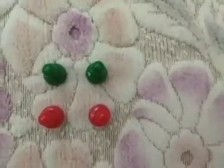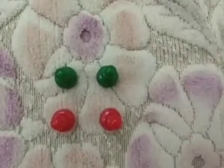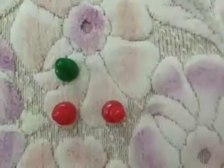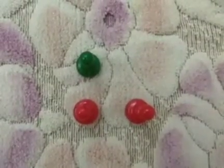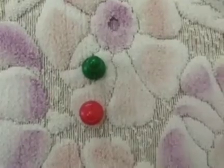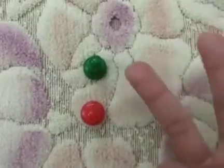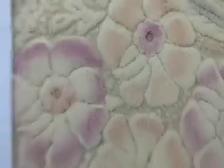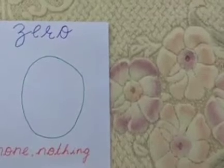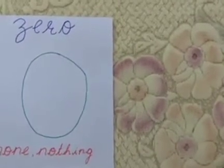Now let us remove one red counter and check how many I have left. One, two, three, four — four counters remaining. Now let us remove a green one. One, two, three — I am left with three counters. Now let us remove one more. One, two — I just have two counters. Now let us remove one red one. I just have one counter. Now let us remove this last green counter. How many counters do I have? I have nothing. I have zero counters left with me.